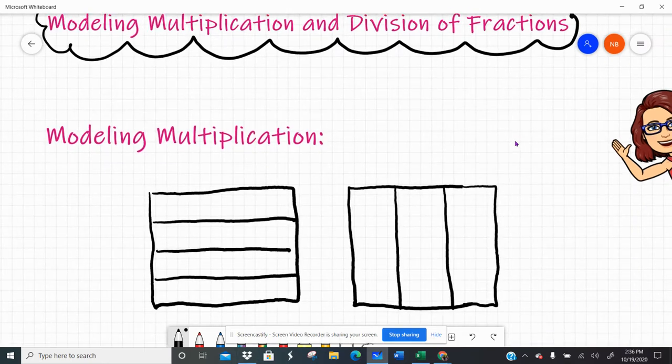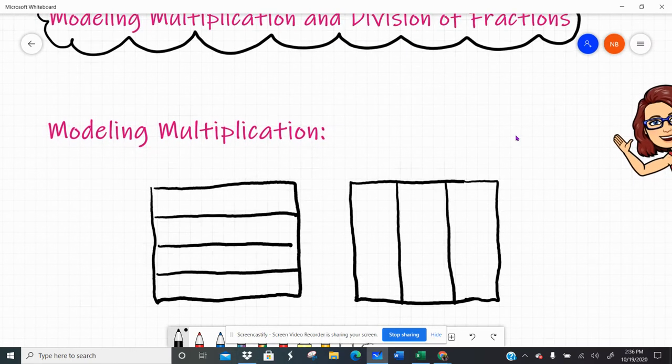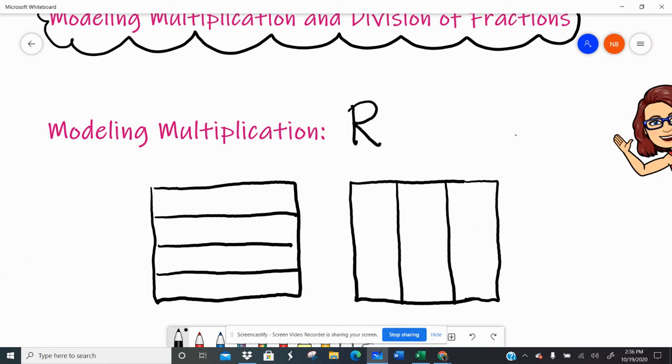When we model, let's start with multiplication. I want you to think of rows times columns, RC, like think RC Cola, like that kind of Coke knockoff. So RC Cola, right?